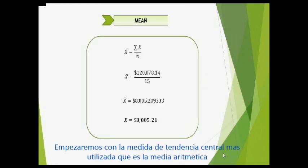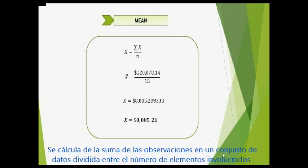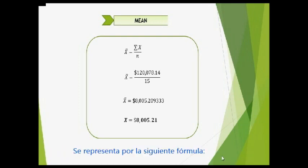Now let's begin with the most frequently used measure of central tendency, which is the mean. The mean is also known as the average or arithmetic mean. It is calculated from the sum of the observations of the dataset, divided by the total number of values in the set. It is represented by the following formula.